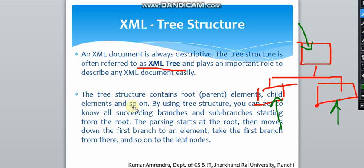By using the tree structure you can get to know all succeeding branches and sub-branches starting from the root. From the root we have all the sub-branches, down to the leaf elements which are the child elements. The parsing starts at the root, then moves down the first branch to an element, and takes the first branch from there, continuing on to the leaf node.